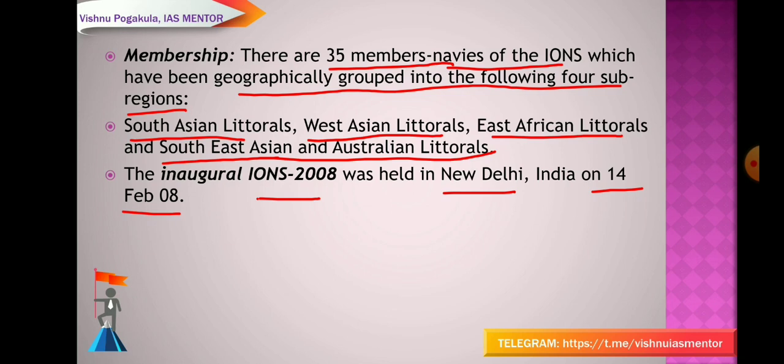Members of the IONS Working Group (IWG) include Australia, Bangladesh, France, India, Indonesia, Iran, Oman, and Thailand. They participated in the event where the guidelines on HADR for IONS nations, prepared by the Indian Navy, were validated.